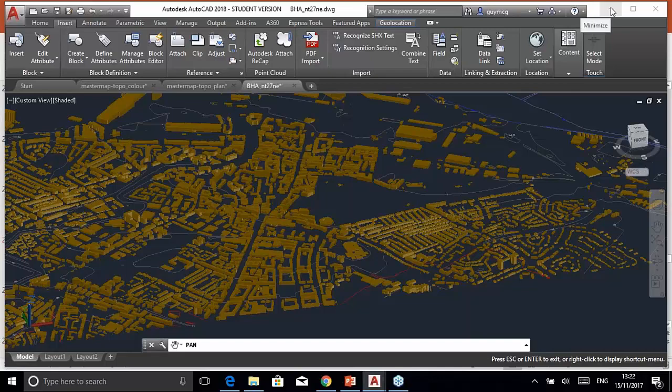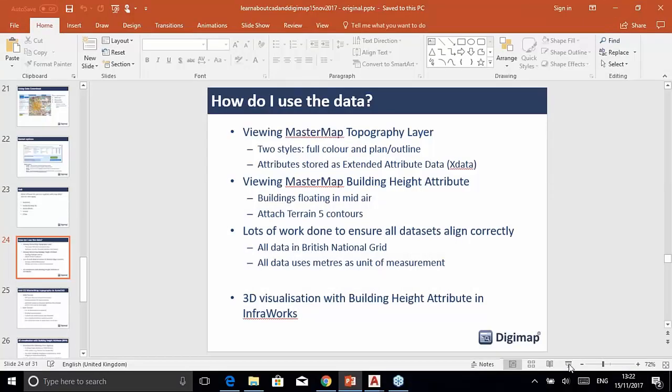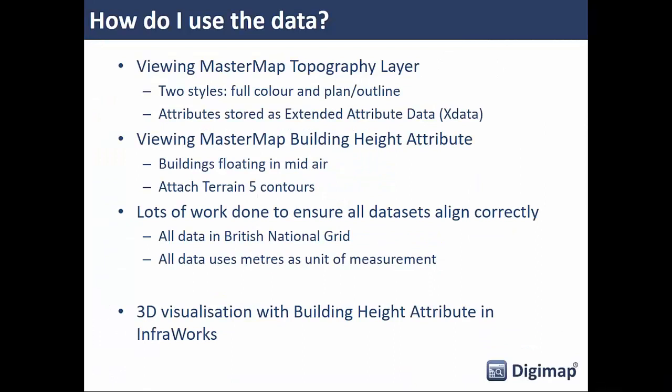We've done a lot of work to ensure all datasets align correctly — we previously had issues where contours would appear in a different place from the buildings they were meant to relate to. All CAD datasets now use British National Grid as the coordinate reference system and meters as the unit of measurement. If you need different units you can convert them in AutoCAD, but meters is the standard format from Ordnance Survey.